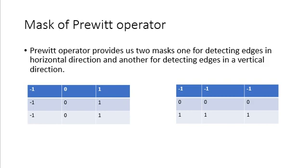The second mask will highlight the horizontal edges in an image. It works on the same principle as the first mask and calculates the difference among pixel intensities of the particular edge. As the center row of the mask consists of zero, it does not include the original values of the edge in the image but rather calculates the difference of the above and below pixel intensities of the particular edge, thus increasing the sudden change of intensity and making the edge more visible. Both masks follow the principle of derivative masks, have opposite signs in them, and both have a sum equal to zero.